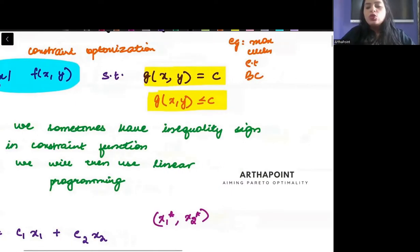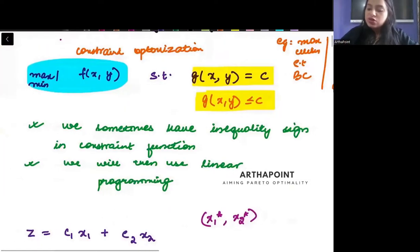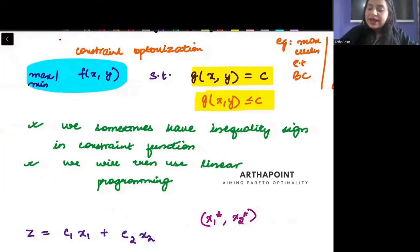or when you want to minimize your cost subject to the given level of output, subject to your production function. So whenever you want to maximize or minimize subject to some constraint in hand, that is called constrained optimization.